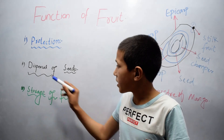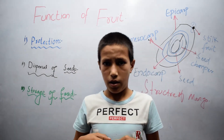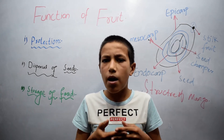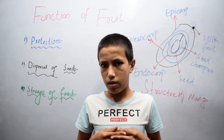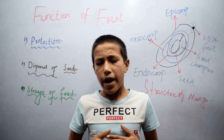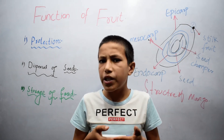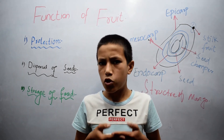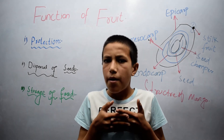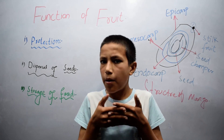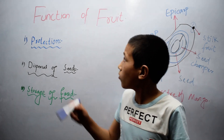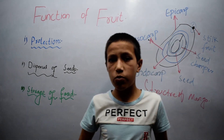The second function is dispersal of the seed — the fruit helps in the dispersal of seeds. The third one is storage of food. The fruit stores food material, as in the case of tomato, apple, and mango. So this was all about the function of fruit. Thanks for watching.